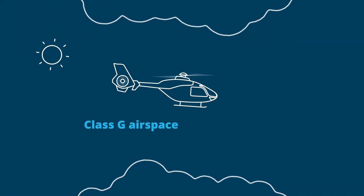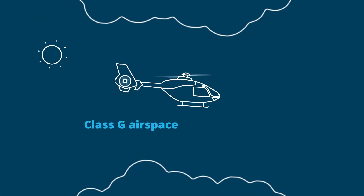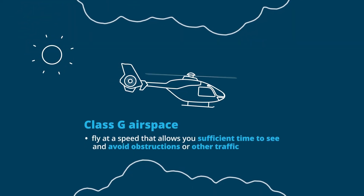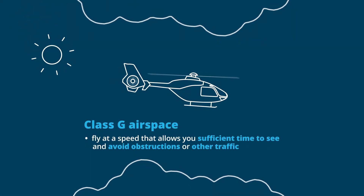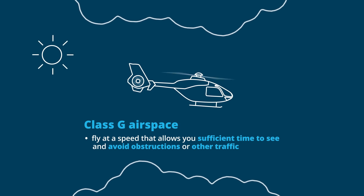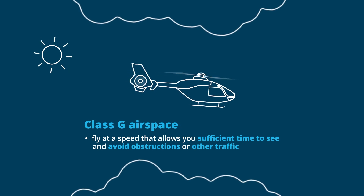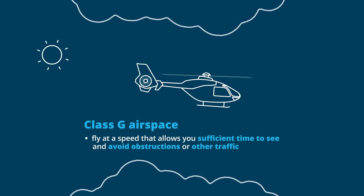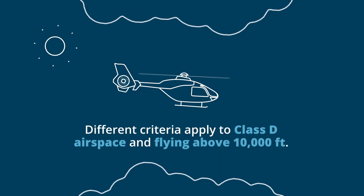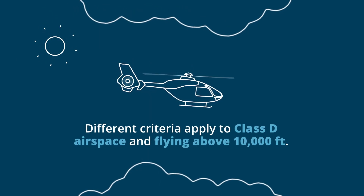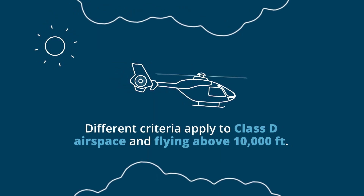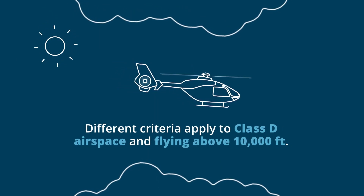In class G airspace, you must always fly at a speed that allows you to see obstructions or other traffic with sufficient time to avoid collision. Different criteria apply to class D airspace and for flying above 10,000 feet.